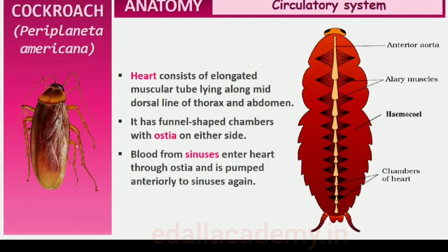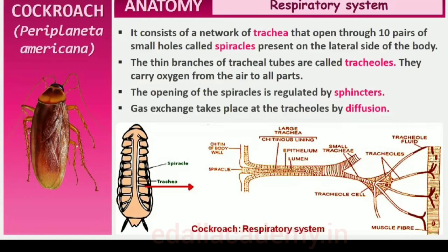The respiratory system consists of a network of trachea that open through ten pairs of small holes called spiracles present on the lateral side of the body. Thin branching tubes called tracheal tubes, subdivided into tracheoles, carry oxygen from the air to all the parts. The opening of the spiracles is regulated by sphincters. Exchange of gases takes place at the tracheoles by diffusion.